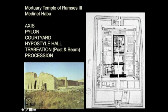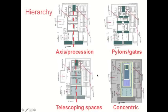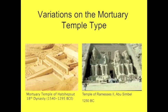Some interesting things about the Medinet Habu temple have to do with secondary organizing spaces. We have the axis and procession from the main pylon to the holy of holies, a series of pylons, and telescoping spaces. But we also have a kind of concentric wrapping of spaces — things are distinguished not only along an axis but also from a perimeter toward a center.